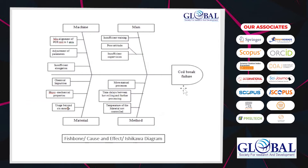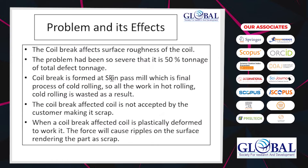We then moved to the fishbone diagram, which shows how coil break failures normally occur. We have plotted it according to man, machine, method, and material type. The problem and its effects: the problem is mainly coil breaks, which affect the surface finish of the coil. Coil breaks represent literally 50% of total defect tonnage. Coil break is formed at the skin pass mill, which is the final process of cold rolling — so any defect at the final stage means all the costs incurred in previous stages are wasted.